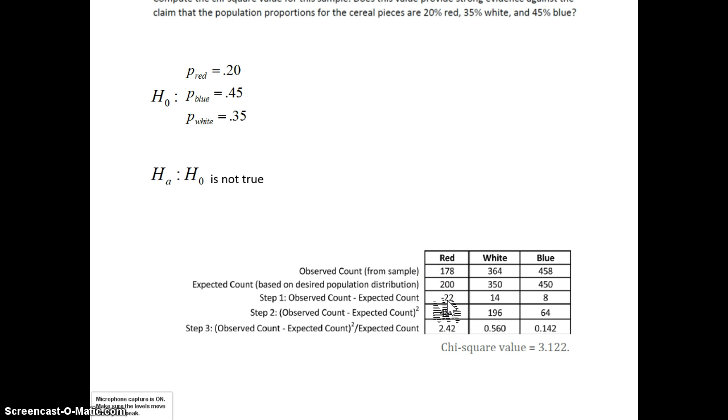To get row 3, we take row 1 minus row 2. This is the deviation between what's observed and what's expected. For red: −22. For white: 364 − 350 = 14. For blue: 458 − 450 = 8. Row 4 is always the deviation from row 3 squared. Remember, a negative number squared is always positive. On your TI, put parentheses around a negative number before hitting the square button. Squaring row 3 gives us 484, 196, and 64.